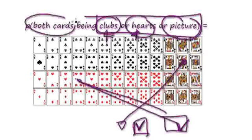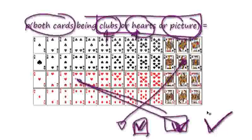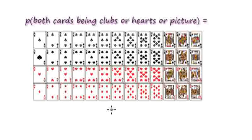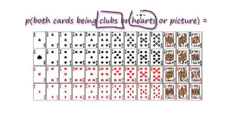Both of these are good, so overall this would be a good outcome. So we're going to pick out two cards at random. What is the probability that both of those cards will be clubs, or hearts, or a picture card?